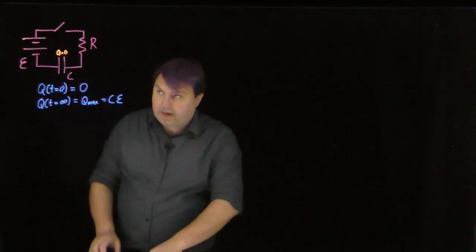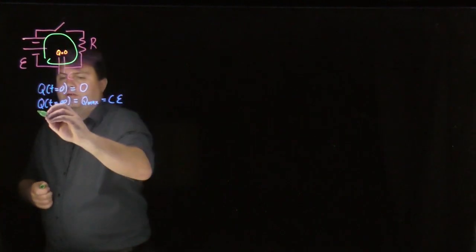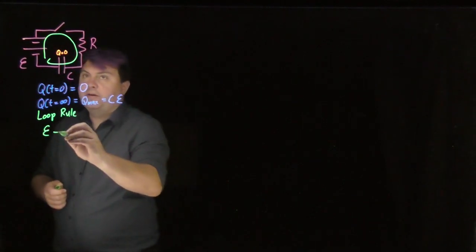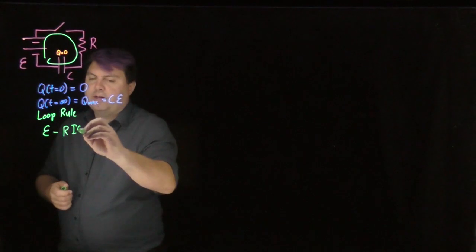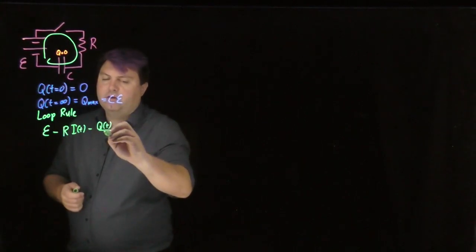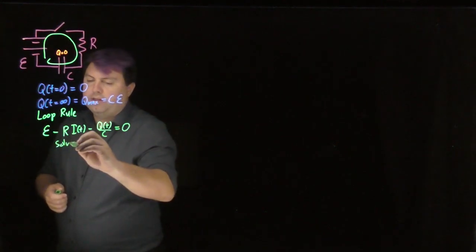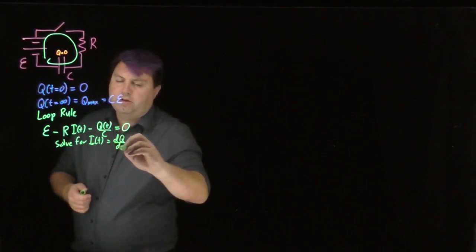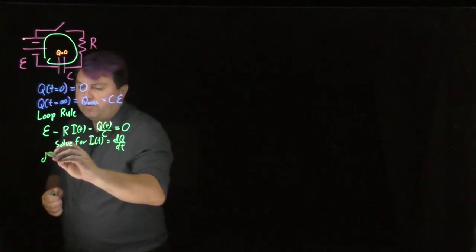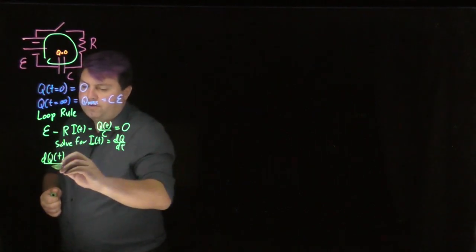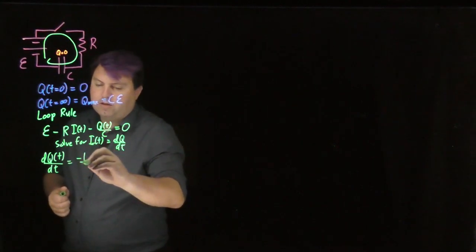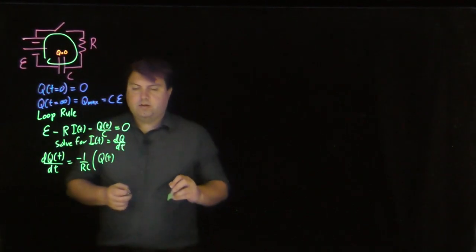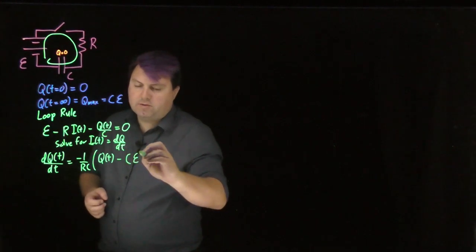We can do a loop rule for this. If we do the loop rule, we get that our EMF minus R times I(t) minus Q(t) over C is equal to zero. Then we solve for I(t), which is equal to dQ/dt, as shown in previous videos. This gives us dQ(t)/dt equals negative one over RC times Q(t) minus C times the voltage of the battery.